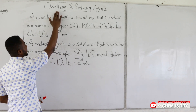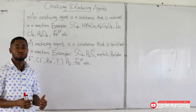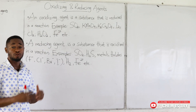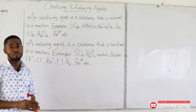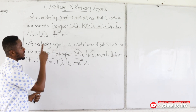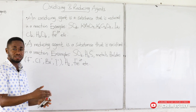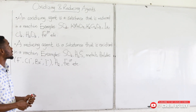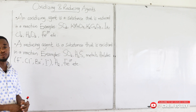Let's talk about oxidizing and reducing agents. We've learned how to define oxidation and reduction in terms of oxygen transfer, electron transfer, and oxidation numbers. We want to know what an oxidizing agent is. An oxidizing agent is a substance that is reduced in a reaction — the substance that is undergoing reduction is what we call the oxidizing agent.